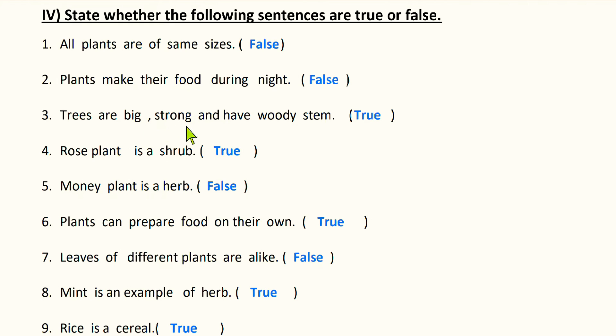Trees are big — true. Trees are big plants which have strong and woody stem. Next: rose plant is a shrub — true. Rose plant is a shrub; it is a small plant which has branches near to the ground. Next: money plant is a shrub — false. Money plant is a climber, so money plant is not a shrub.